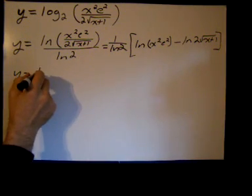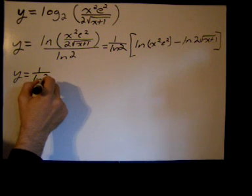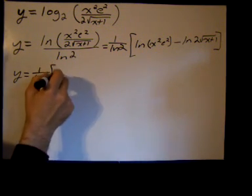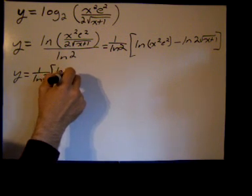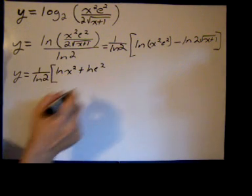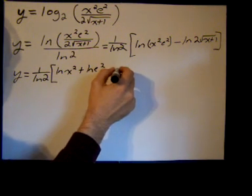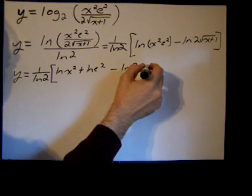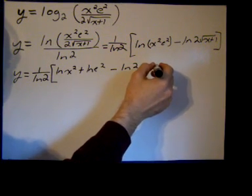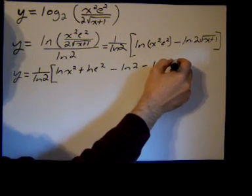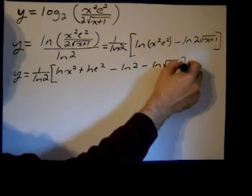More and more I'm kind of wondering if this method is easier. But anyway, it's the way your book shows it, so it's the way I'm going to do it. So we have the ln of x squared plus the ln of e squared minus the ln of two minus, I'm distributing the negative, minus the ln of the square root of x plus one.